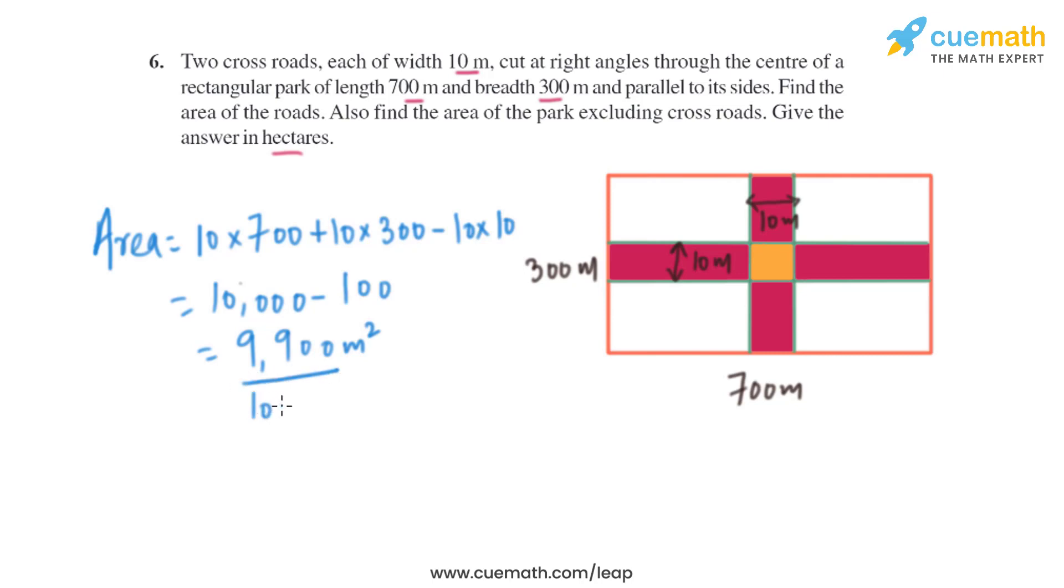To convert it into hectares: 9,900 ÷ 10,000 = 0.99 hectares. That will be the area of the crossroads.